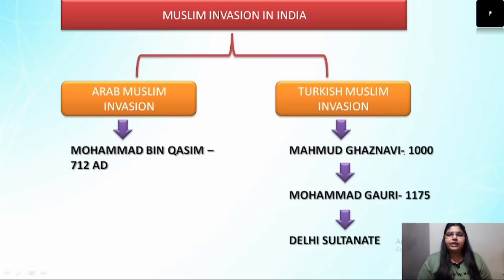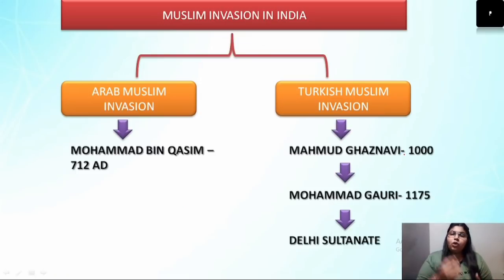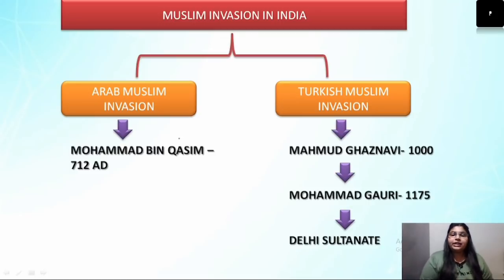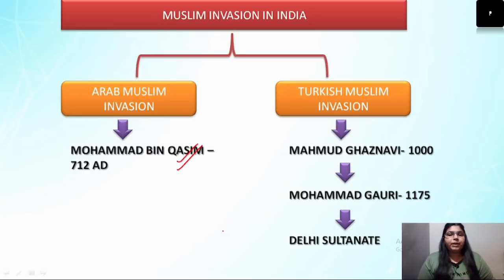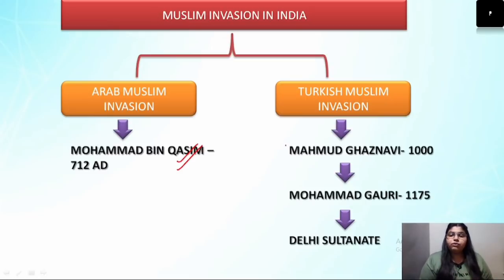Before starting, we can see how the Muslim invasion happened in Bharat and who the main rulers were. The first successful Muslim invasion in Bharat was the Arab Muslim invasion, done by Muhammad bin Qasim, who attacked Sindh in 712 AD. Besides, there was a Turkish Muslim invasion — the two most important rulers being Mahmud of Ghazni and Muhammad Gauri.